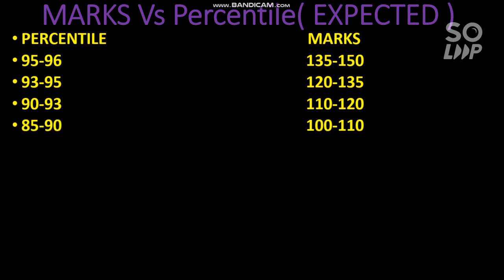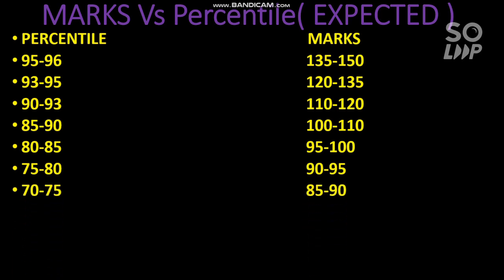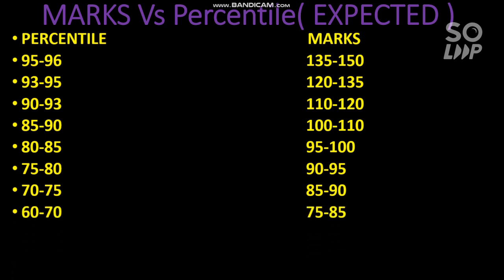For 90 to 93 percentile, your marks would be 110 to 120. For 85 to 90 percentile, your marks would be 100 to 110. For 80 to 85 percentile, your marks would be 95 to 100. For 75 to 80 percentile, your marks would be 90 to 95. For 70 to 75 percentile, your marks would be 85 to 90. For 60 to 70 percentile, your marks would be 75 to 85.